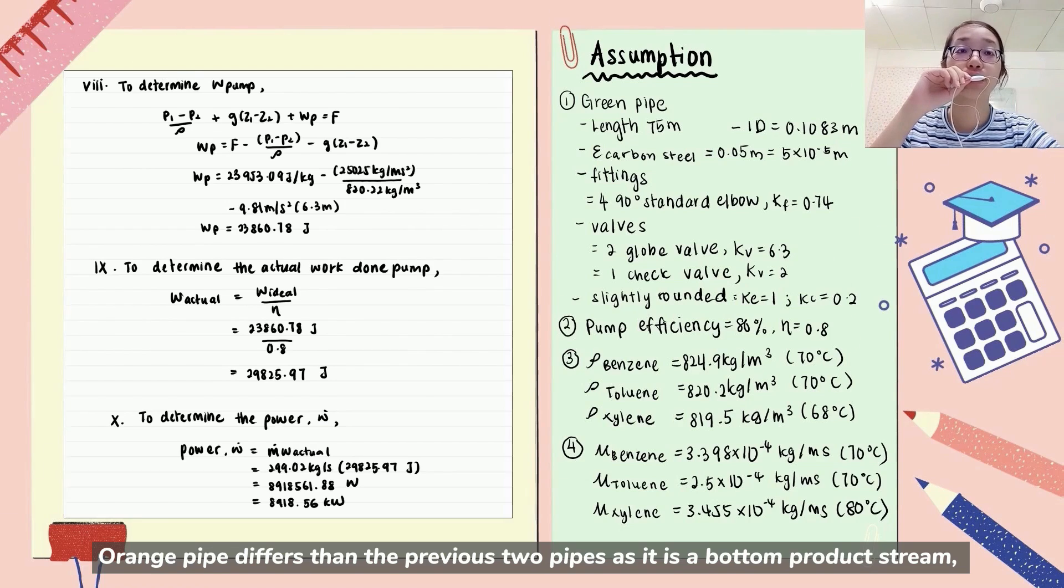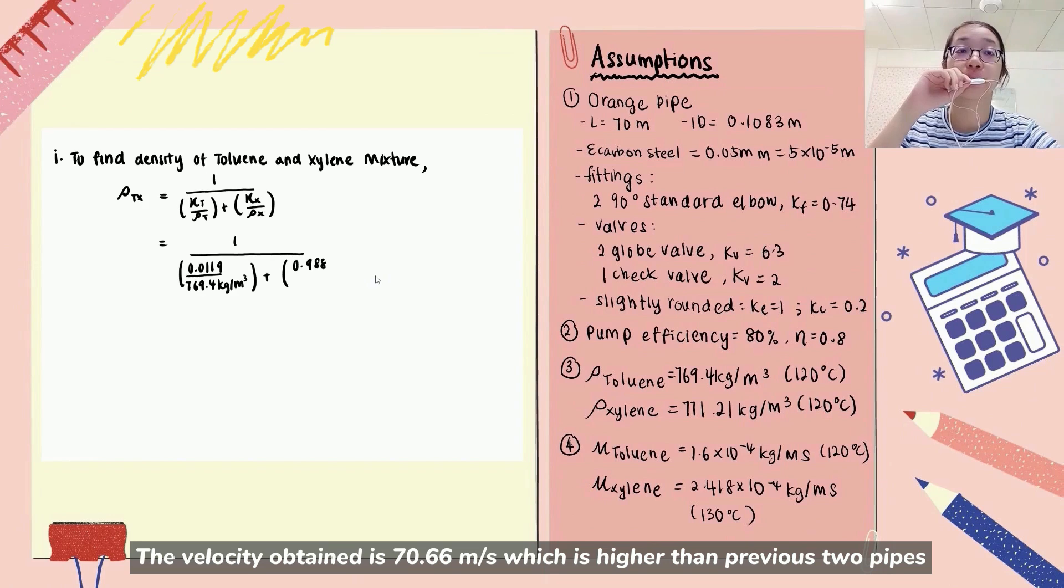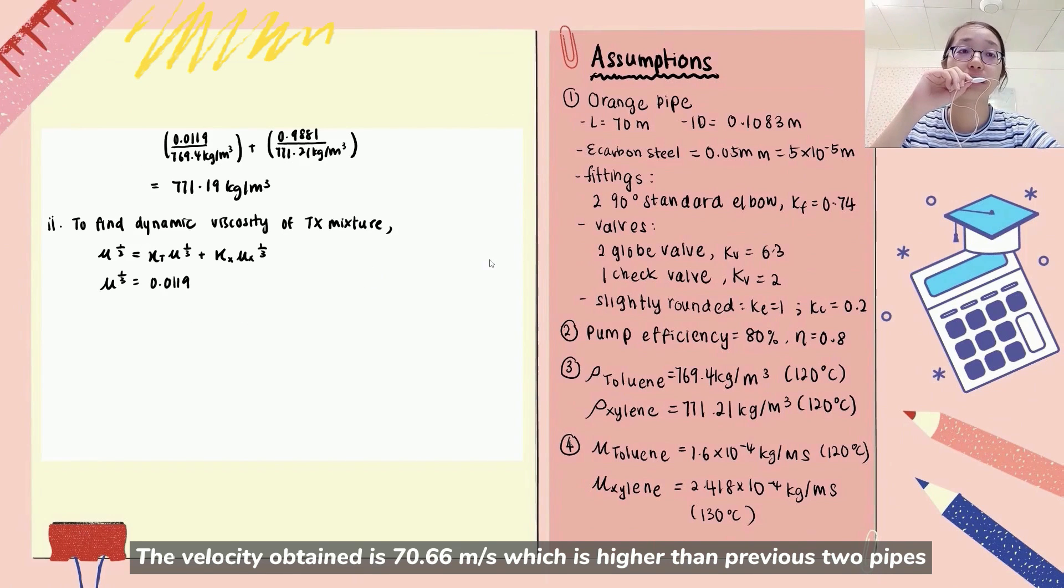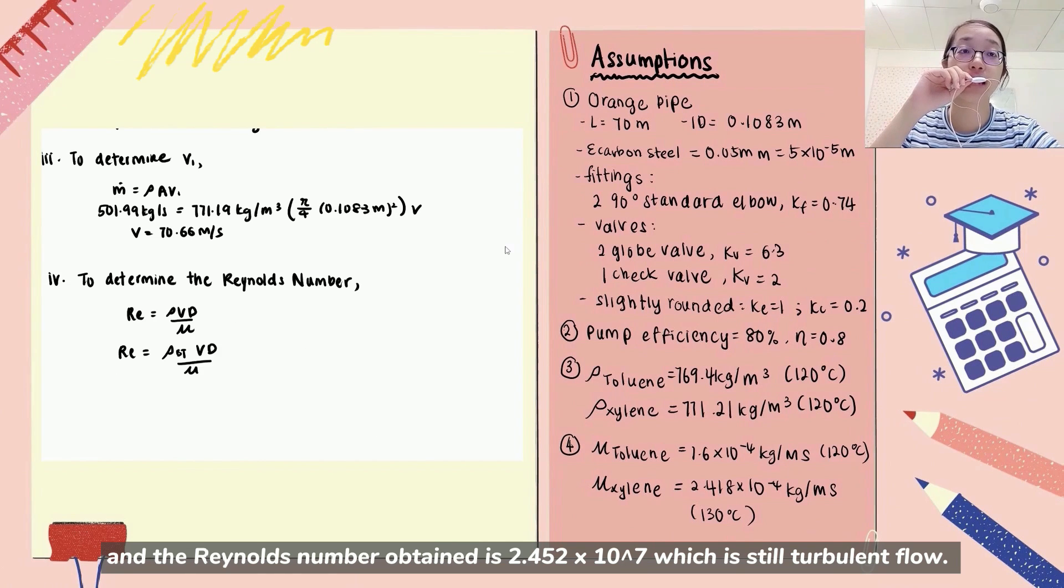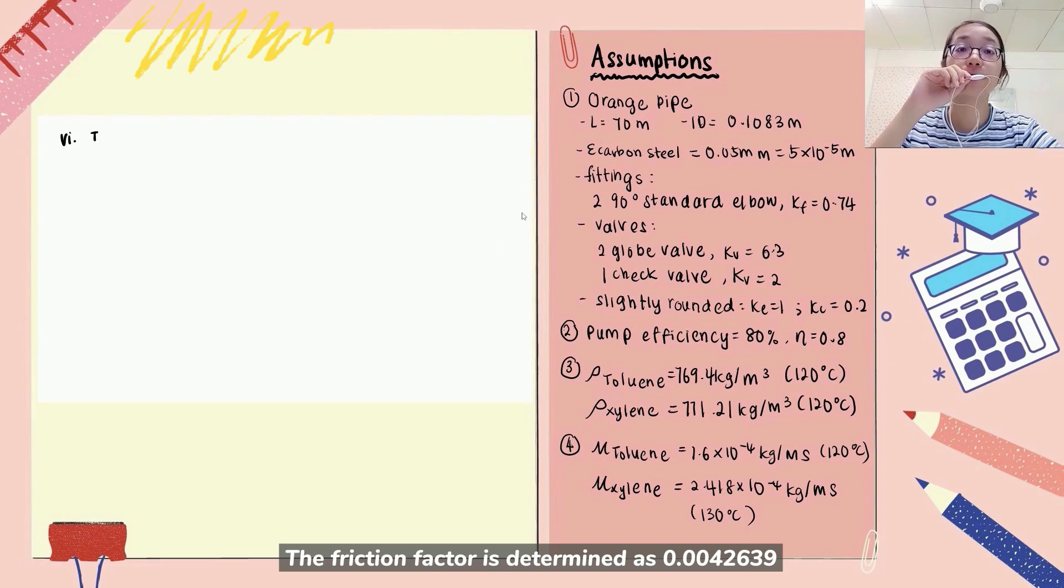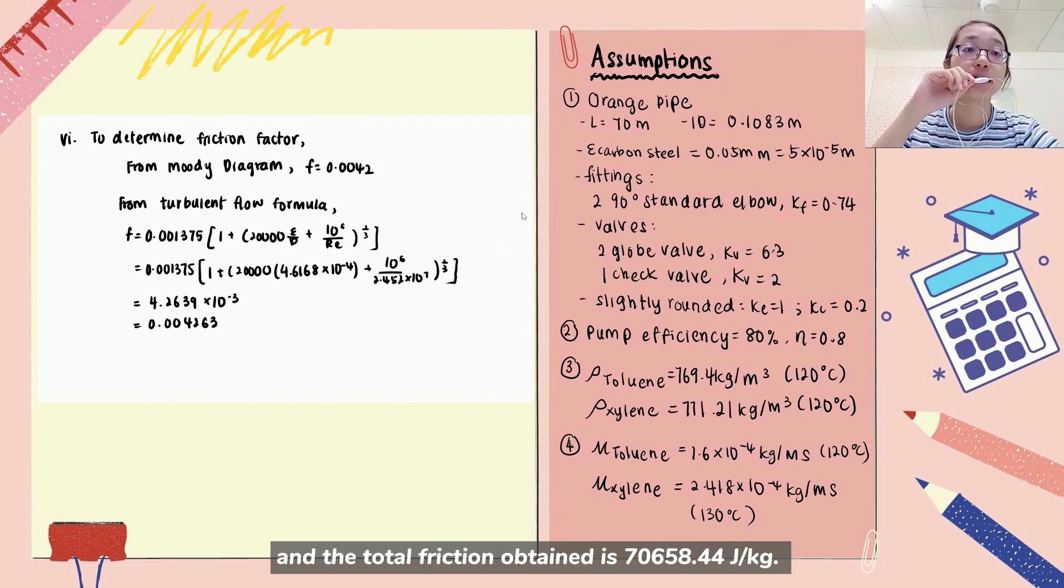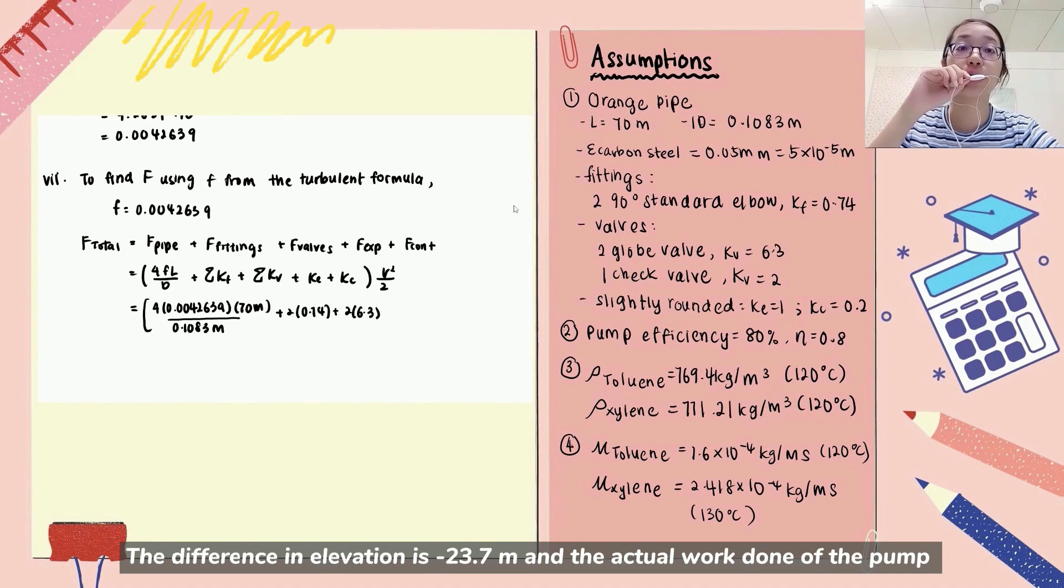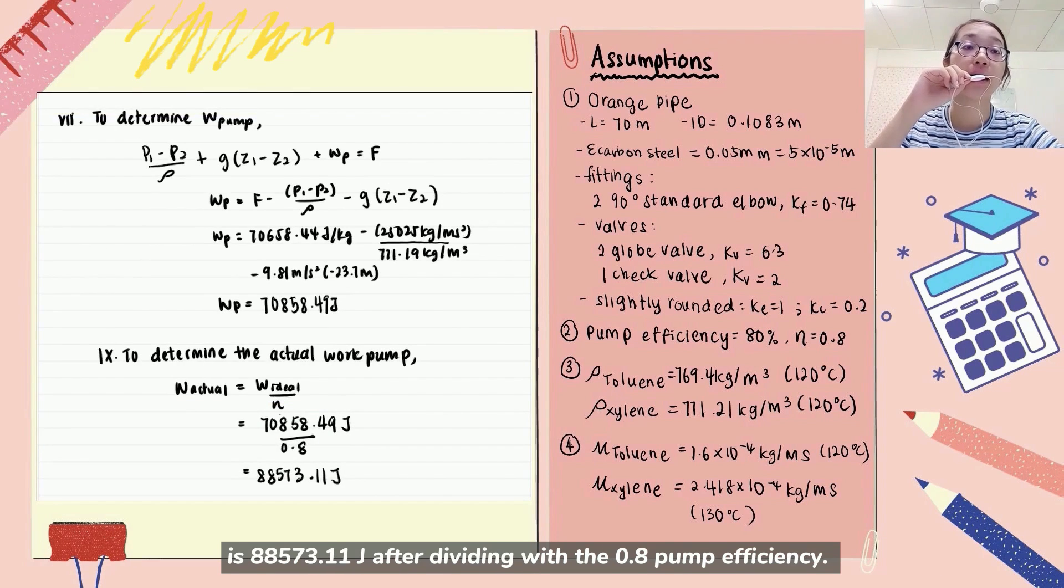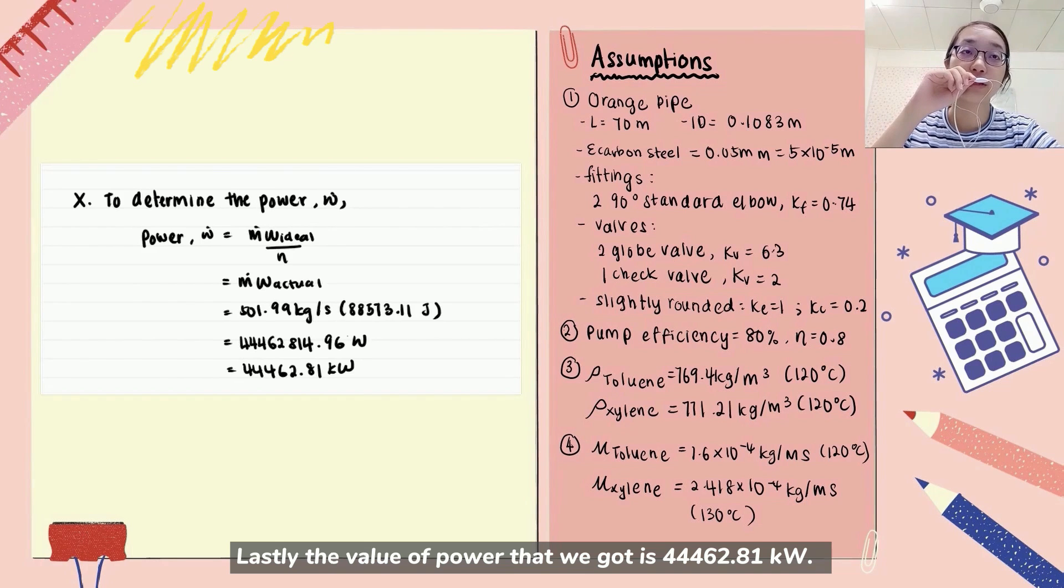Orange pipe differs from the previous two pipes as it is a bottom product stream so its pipe length is shorter with a lesser number of fittings. The velocity obtained is 17.66 meters per second which is lower than the previous two pipes and the Reynolds number obtained is 2.452 times 10 to the power of 7 which is still turbulent flow. The friction factor is determined as 0.0042639 and the total friction obtained is 7065.44 Joules per kg. The difference in elevation is negative 23.7 m and the actual work of the pump is 8857.31 Joules after dividing with the 0.8 pump efficiency. Lastly, the value of power that we got is 4462.81 kW.